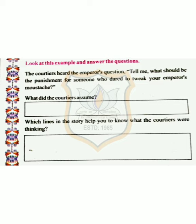In the second box, we have to write which lines in the story help you to know what the courtiers were thinking. For example: first, 'Only the most foul criminal would dare to touch the king.' Second, 'This villain should be mercilessly flogged to death.' Third, 'Beheaded in full public view.' And fourth, 'The villain should be thrown down from the fort or be hanged.'